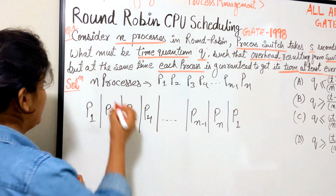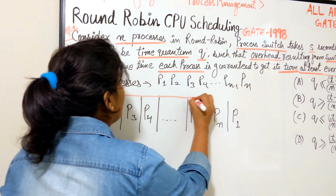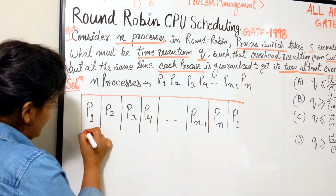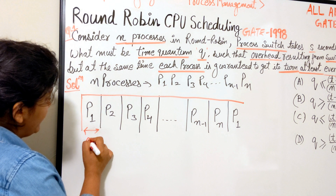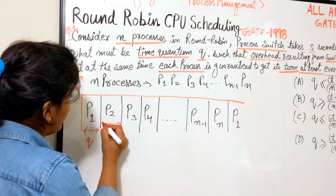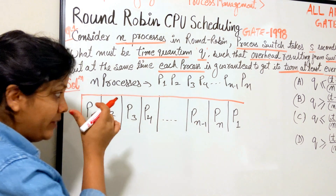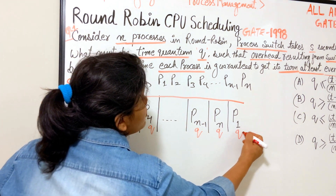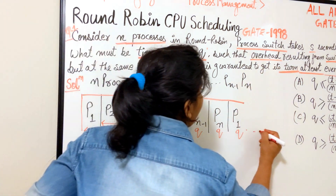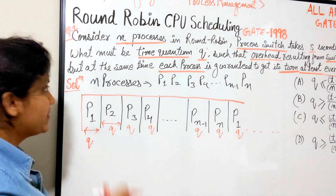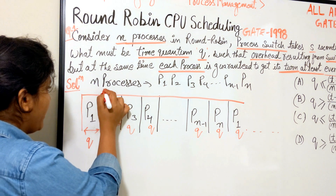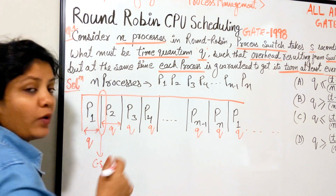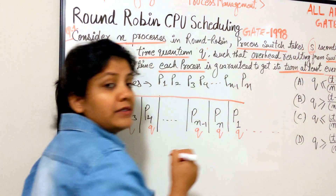Looking at the Gantt chart, each process takes one time quantum q. So from start to end of each process slot, the time taken is q. For every process in the chart — p1, p2, p3, all the way to pn — each one takes q time units. In between p1 and p2, and between every consecutive pair of processes, a context switch is taking place.